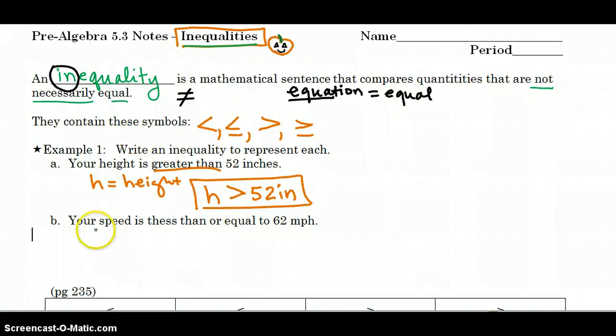Then we can look at your speed is less than or equal to 62 miles per hour. So let's say S is for speed. I like to put a little curl on my S. So our speed is less than or equal to 62 miles per hour. So the difference in this one and the first one is there's an equal to. So you might equal 62, but you could also be less than in your speed.